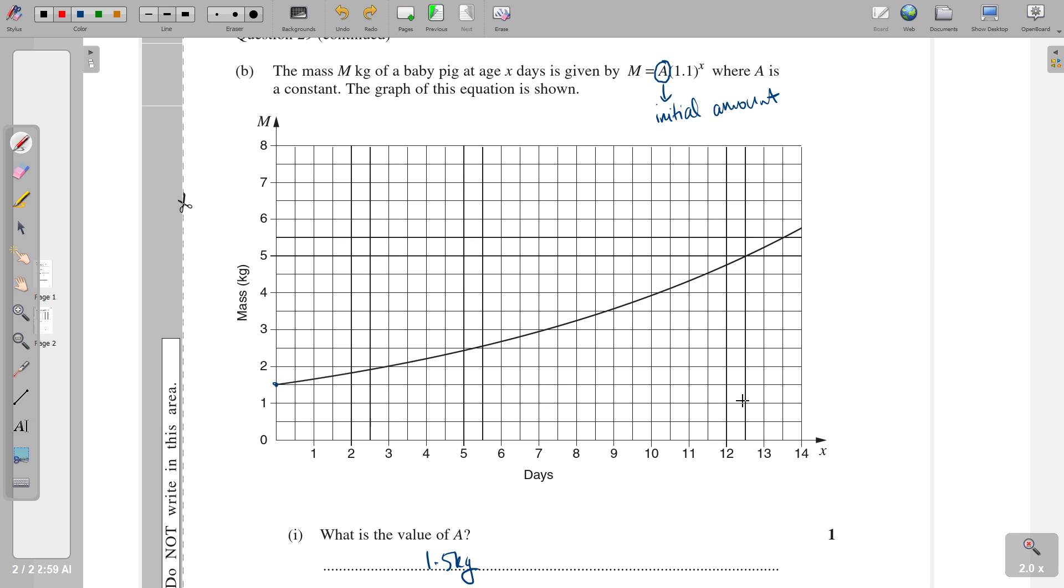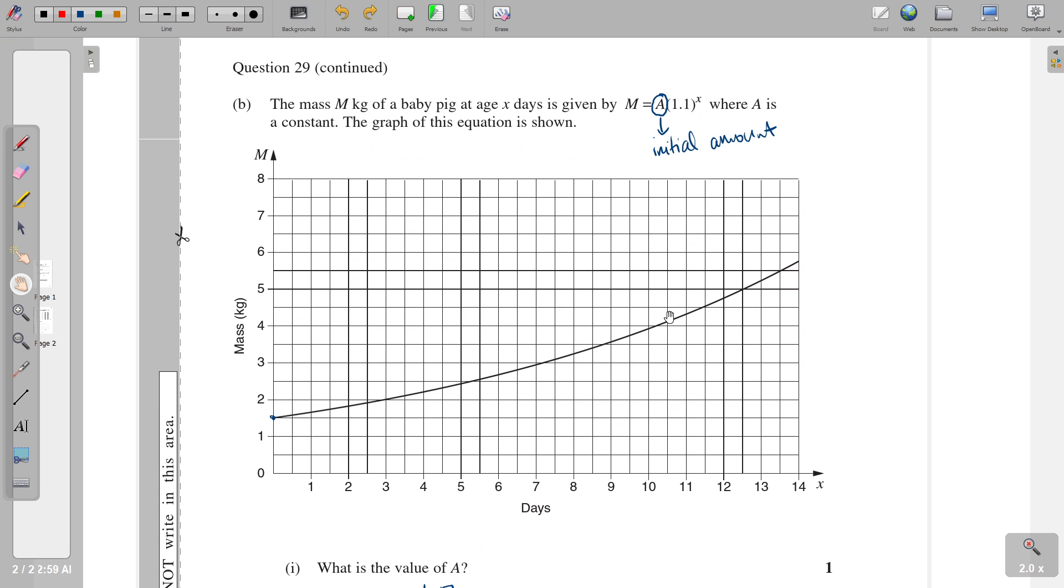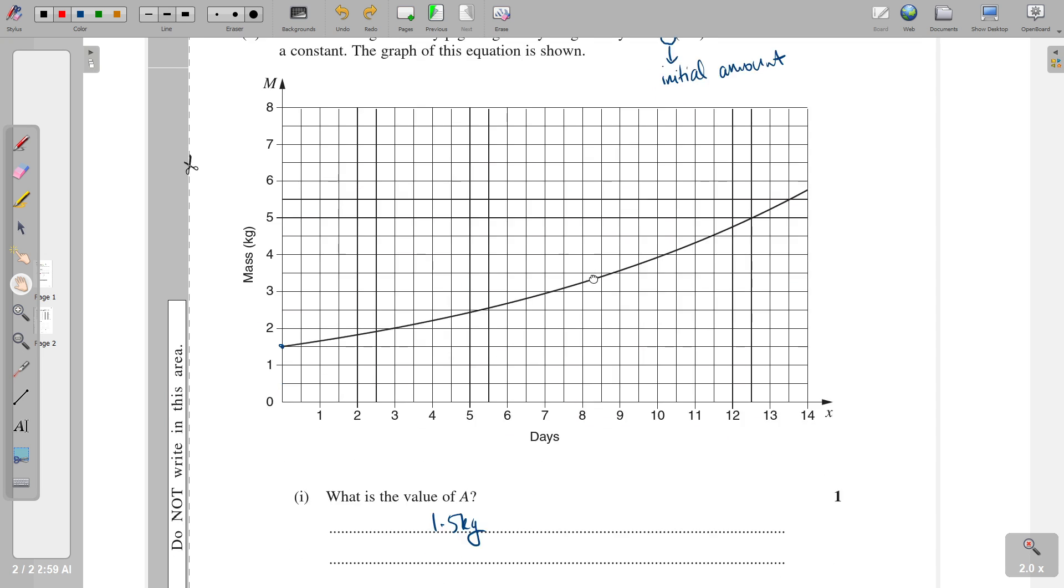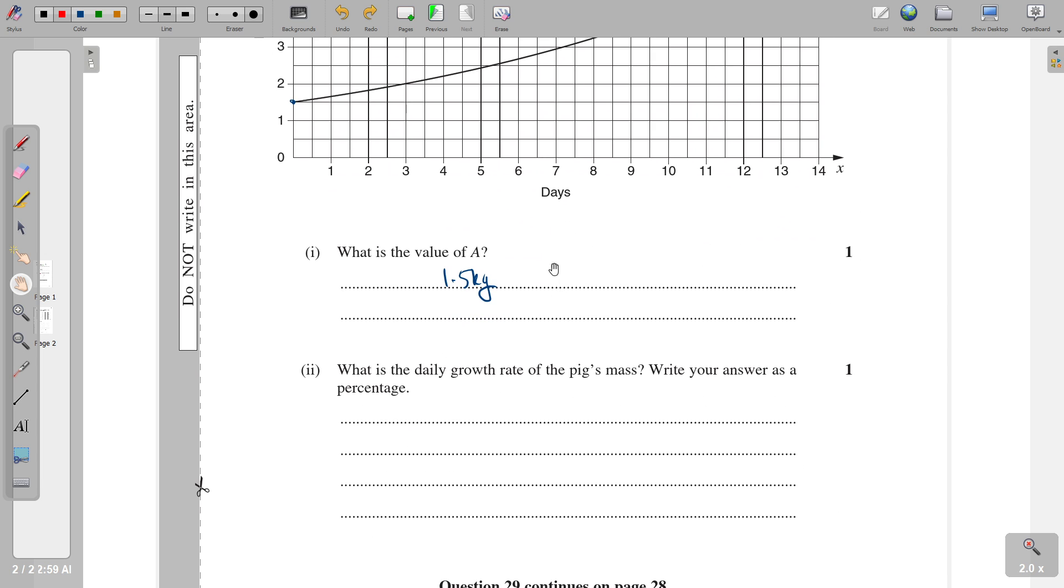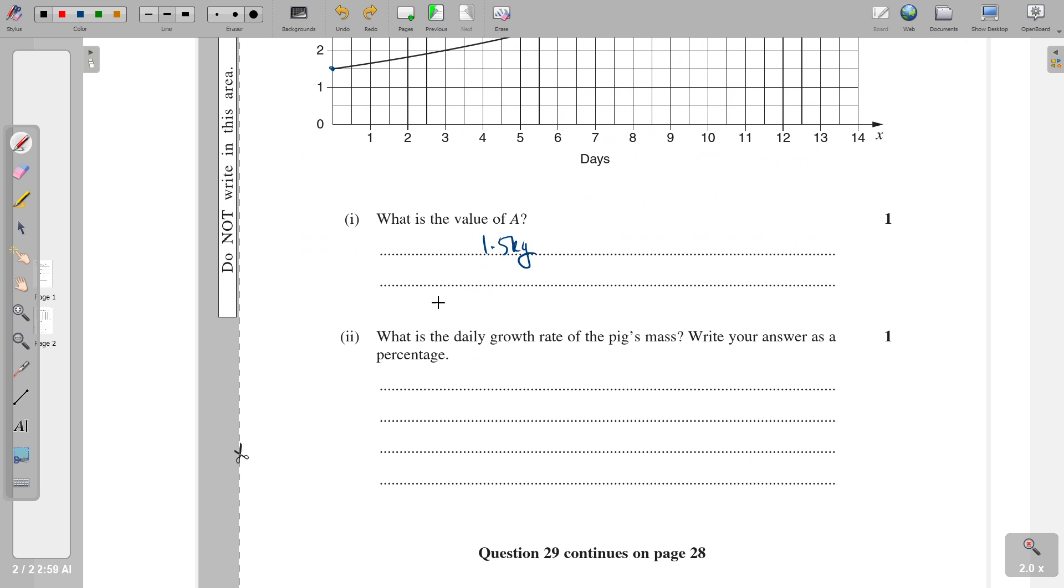And so that's why we're doing it as a percentage. Now, we want to think, what is happening every time one extra day passes? Well, because the power of x is being applied to 1.1, we know that every day, I want to be really explicit with this, every day, the mass of the pig is multiplied by 1.1.